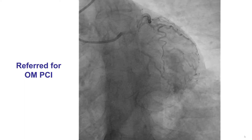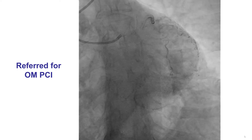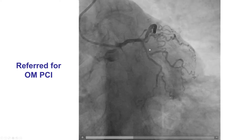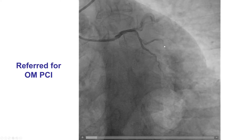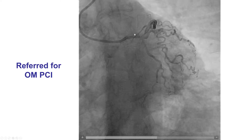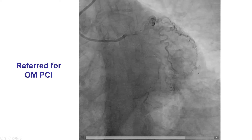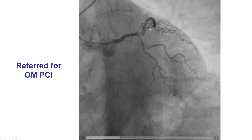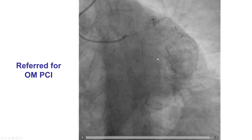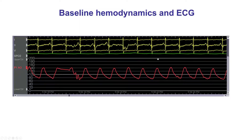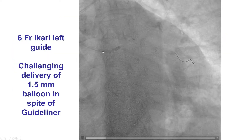The patient was referred for staged intervention of a significant lesion in the origin of the first obtuse marginal branch. The patient had previously undergone successful PCI of the left anterior descending with a good result, and was hemodynamically stable without any significant EKG changes.